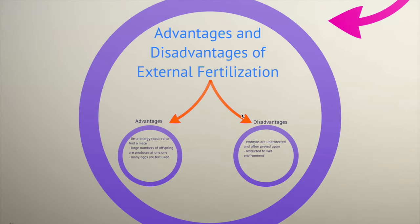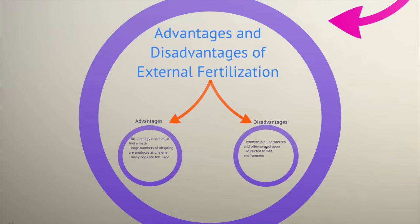The advantages and disadvantages of external fertilization: the advantages are that little energy is required to find a mate, because the organism releases sperm or eggs into the water without needing to locate a partner directly. Large numbers of offspring are produced — some organisms produce millions of eggs and millions of sperm in the water. This is a huge advantage because many eggs and sperm are destroyed, so they need to produce a lot to keep their species alive. The disadvantages are that embryos are unprotected and restricted to a watery environment.